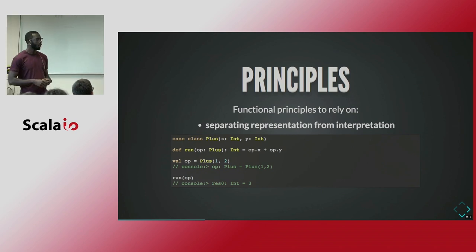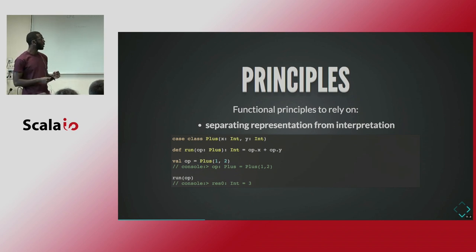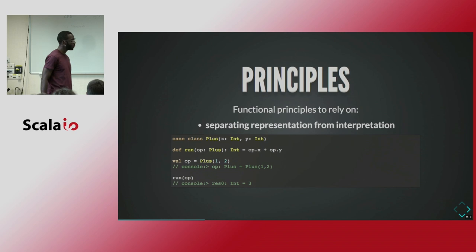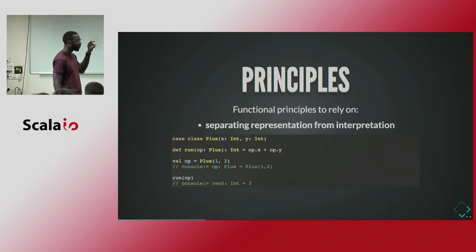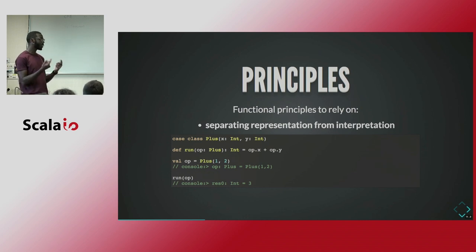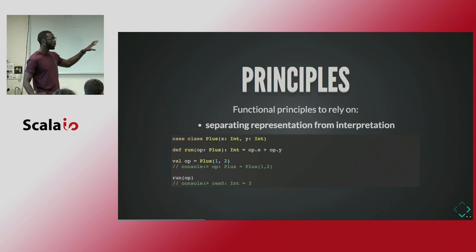To do so in Scala, we'll define a case class 'Plus', which represents our operation. That case class will have two attributes, X and Y, for the operands. And we define a function 'run'. That function takes as a parameter an operation Plus and performs the computation — it takes the two operands, sums them up, and gives us the result. In order to use that calculator, we instantiate an operation. We instantiate the operation Plus with one and two as the operands. That gives us only an instance of our operation, but we don't get the result yet. We then pass it to the 'run' function, which performs the computation and gives us the result. Here we are separating the representation of our operation — the Plus — from the interpretation, because the interpreter is just the 'run' method.